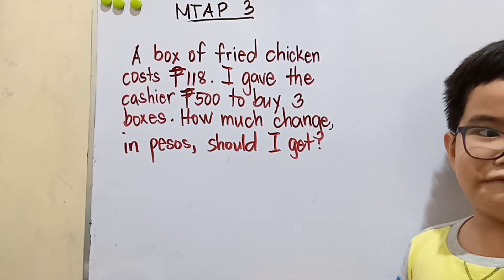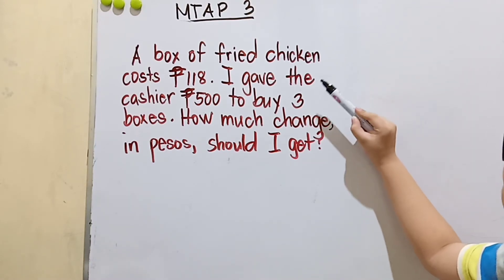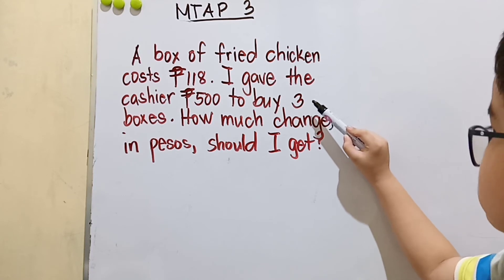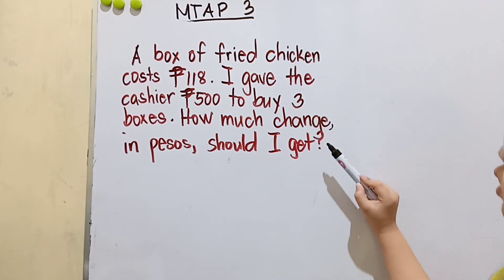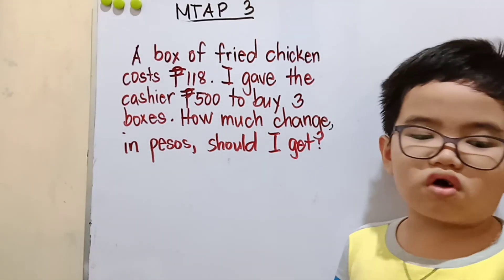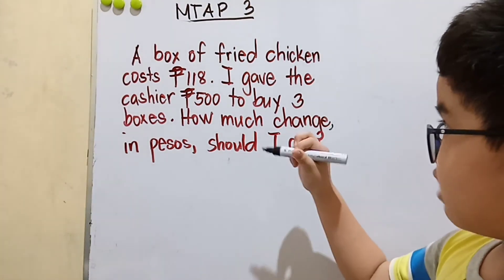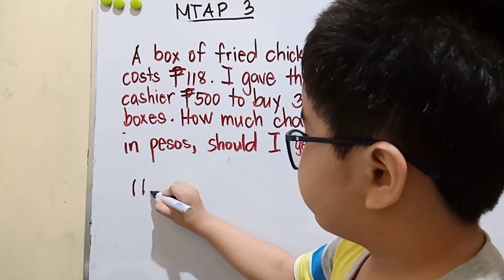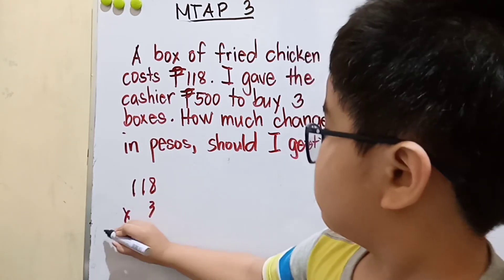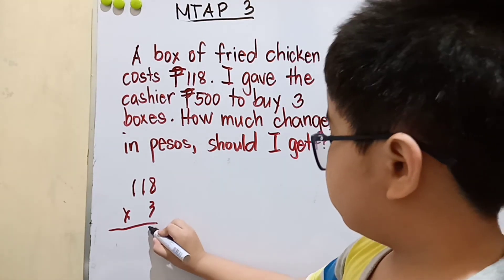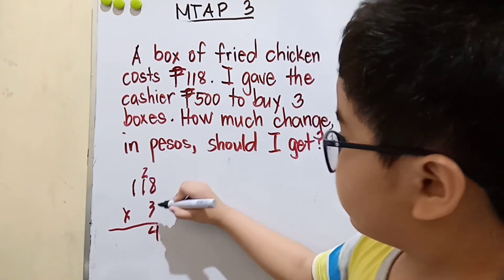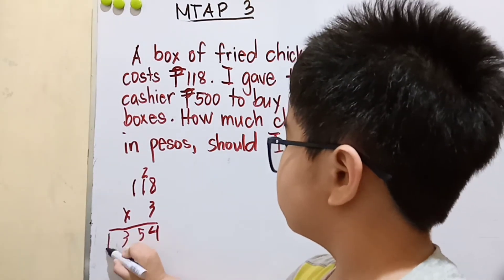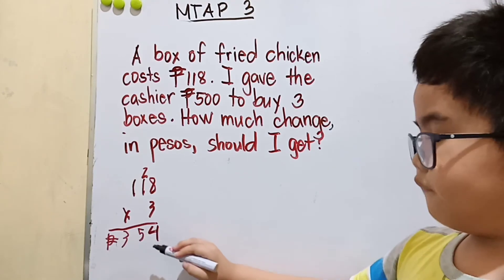Now this is the fourth problem. A box of fried chicken costs 118 pesos. I gave the cashier 500 pesos to buy 3 boxes. How much change in pesos should I get? Come on, let's solve it. To solve this problem, let us find first the amount of 3 boxes of fried chicken. So, 118 times 3: 8 times 3 is 24, 3 times 1 is 3 plus 2 is 5, 3 times 1 is 3. So we have 354 pesos.